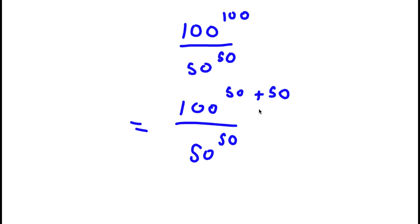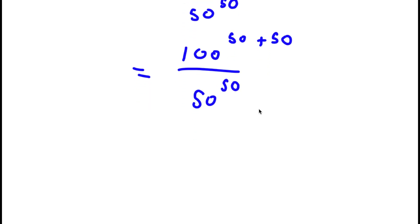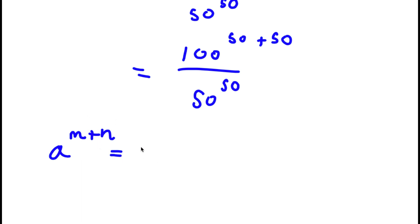An important property of exponents is that if I have something in the form a to the power of m plus n, this is simply equal to a to the power of m times a to the power of n.